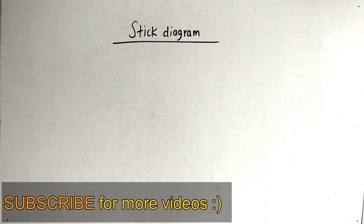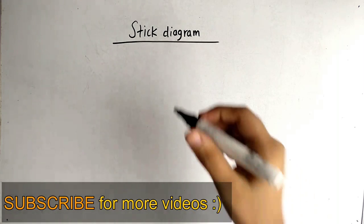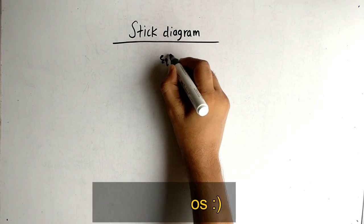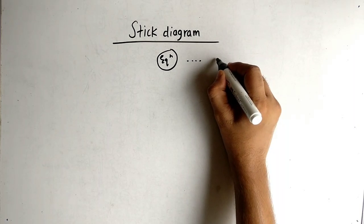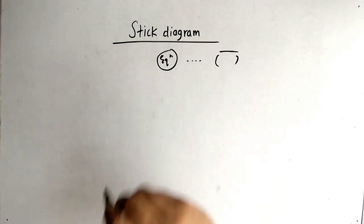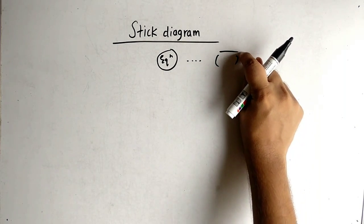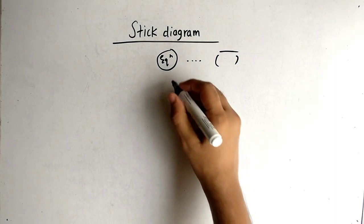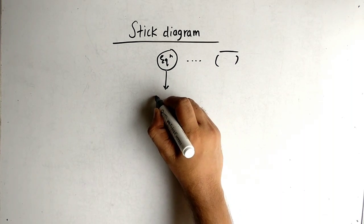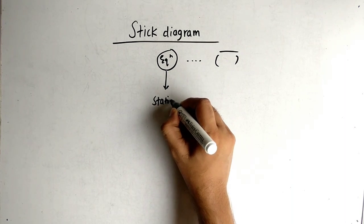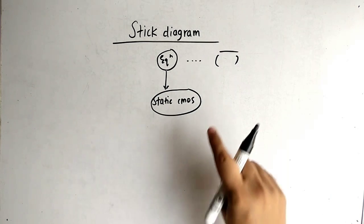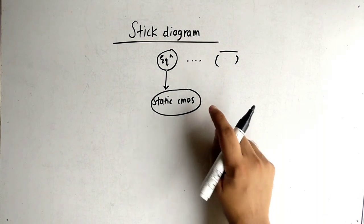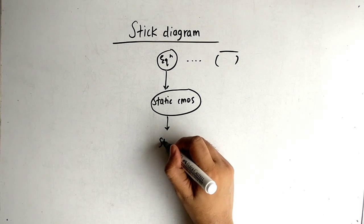Hello friends, today our topic is stick diagrams. Let's see the flow of how to solve any stick diagram problem. The first step is to have the equation in the question. The equation should be represented in the form of something with a whole bar — the bar is very important. The second step is to draw the static CMOS circuit, and using this circuit we can draw the stick diagram.